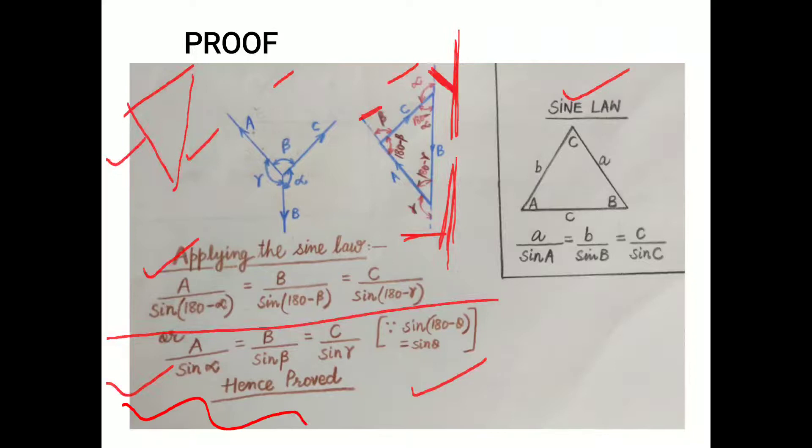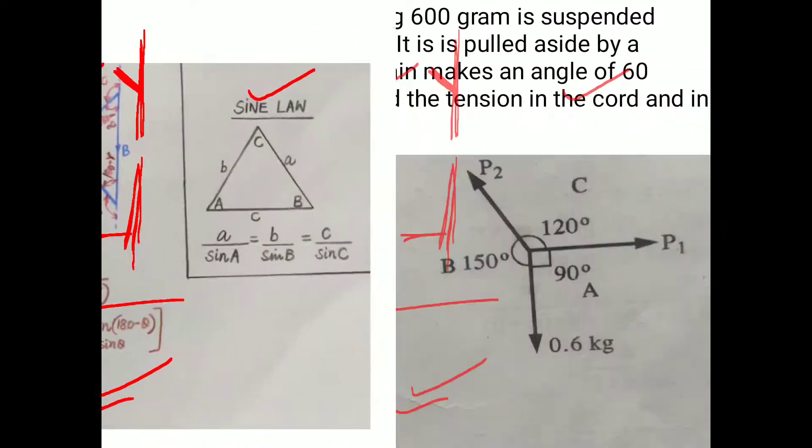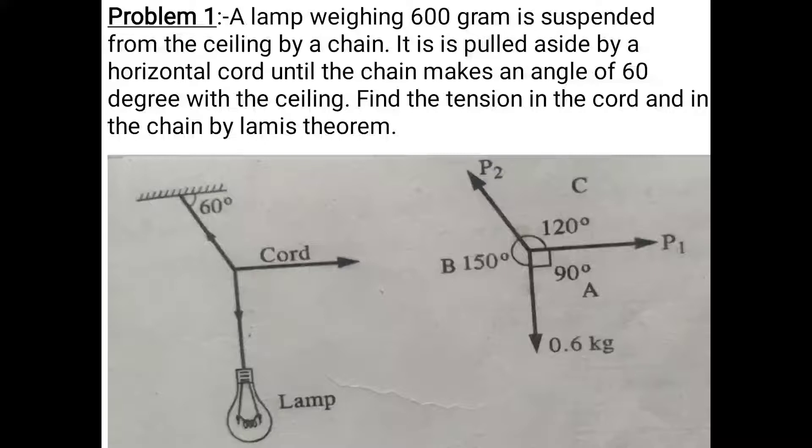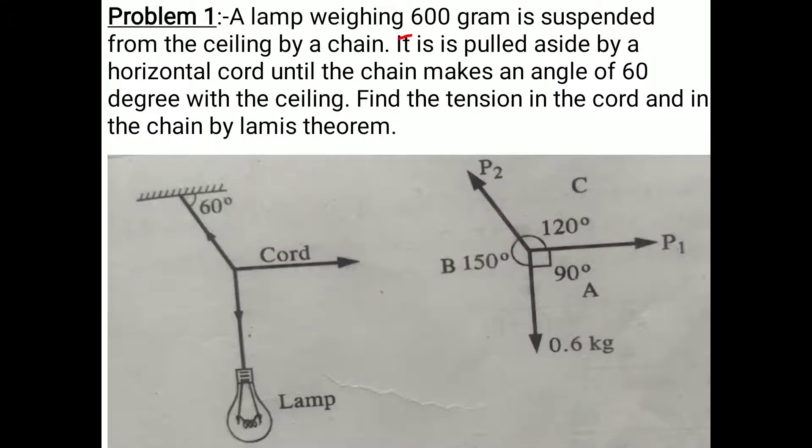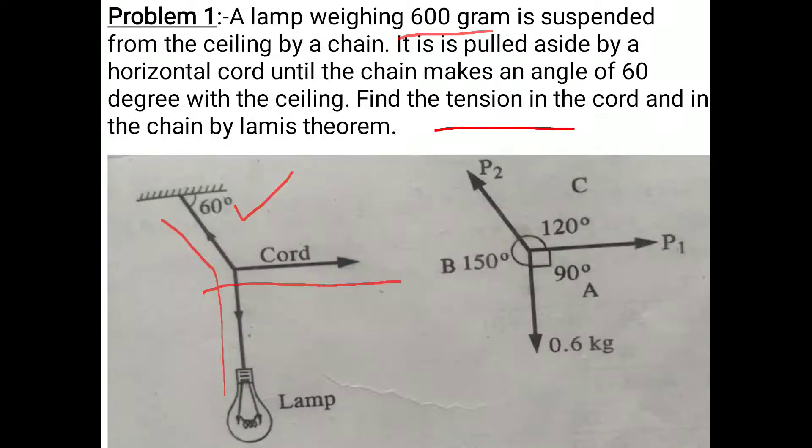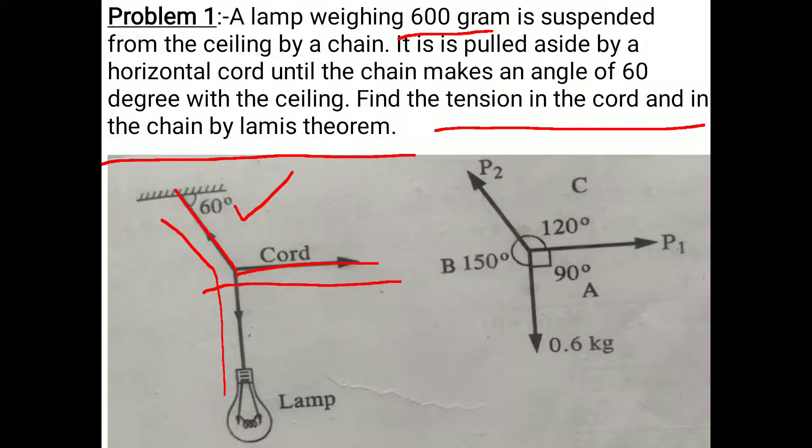Now the first problem: A lamp with weight 600 grams is hanging from a ceiling by a chain. The chain is pulled by a cord at an angle, making 60 degrees with each other. Find the tension in the cord and in the chain using Lami's theorem.